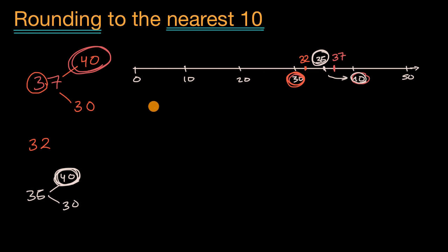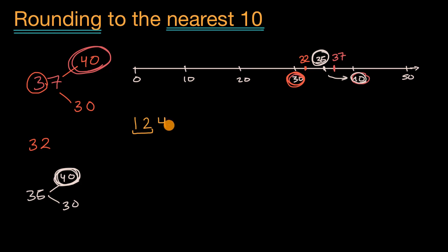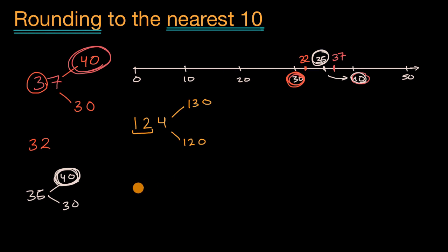Let's do an example with a three-digit number where we're rounding to the nearest 10. Let's round 124 to the nearest 10. You could say this is 100, two tens, and four ones — or you could view it as 12 tens and four ones. So 124 is greater than 12 tens, which is 120, and less than 13 tens, which is 130. Those are the two tens closest to this number. To decide which one it rounds to, let me draw it on a number line.